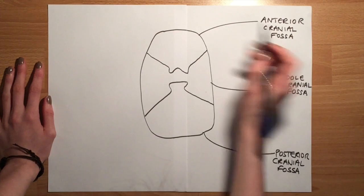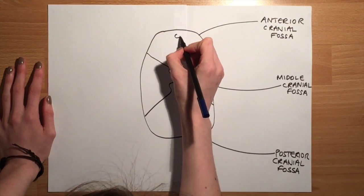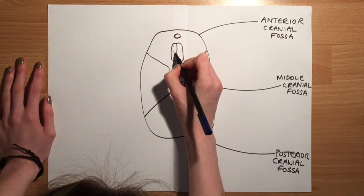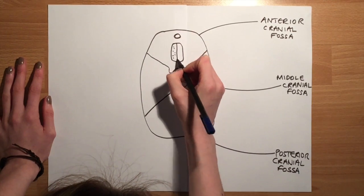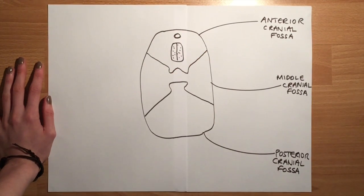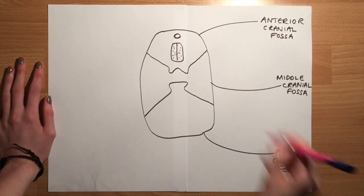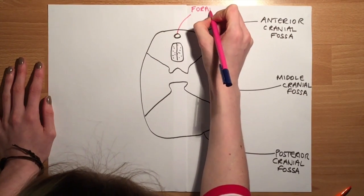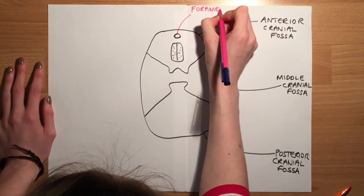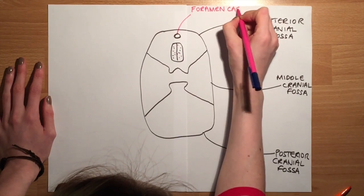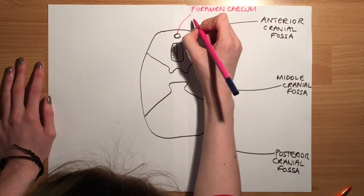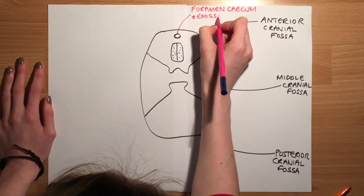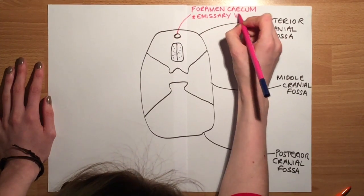First of all we are going to focus on the anterior cranial fossa and draw the two foramina found there. First we focus on the foramen cecum, which is actually only found in one percent of the population. In life, it can transmit an emissary vein which drains the nasal cavity into the superior sagittal sinus.